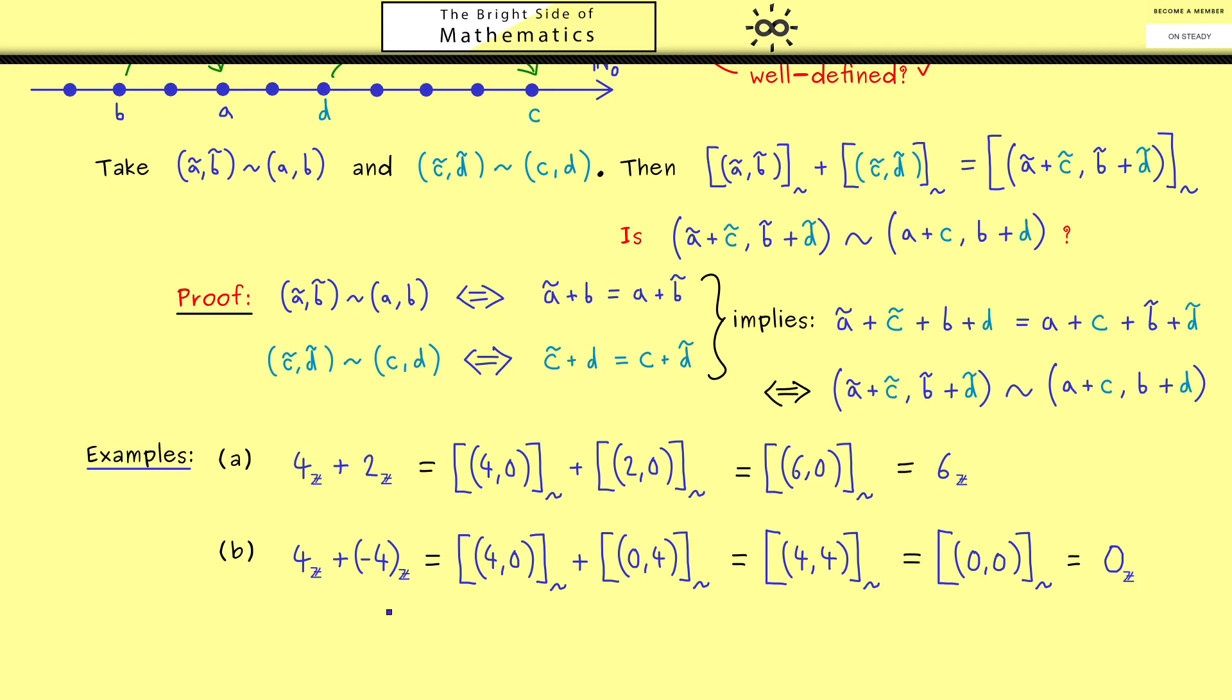This means that we now have actually found an inverse of the number 4. However, you immediately see this whole procedure works for every integer. Hence every number in ℤ has indeed an inverse element. In this case, we don't need the subtraction as a new operation. We can just use the normal addition in combination with the inverses.